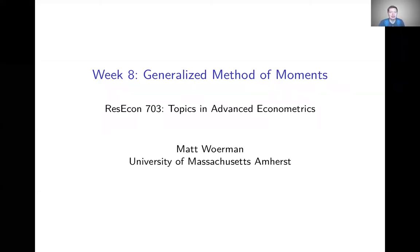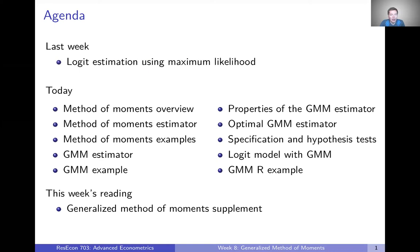Hey everyone, welcome to week eight of Advanced Econometrics. This week we're talking about GMM, the generalized method of moments, another estimation strategy that we can use to estimate structural econometric models. Just a quick recap of the last couple weeks: two weeks ago we talked about maximum likelihood, our first estimation method. Then last week we applied that to the logit model, and we talked about how GMM was another way we could estimate the logit model. Today we're going to talk about how to do that.